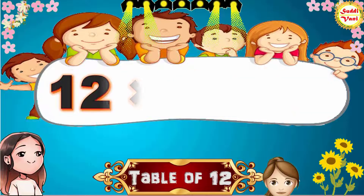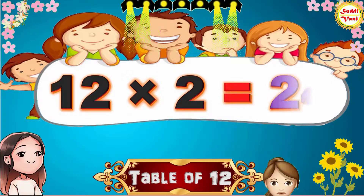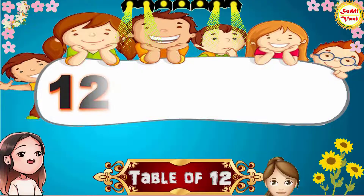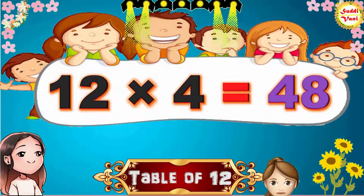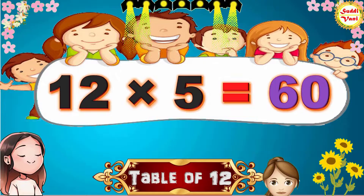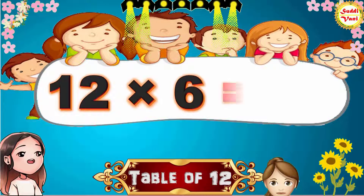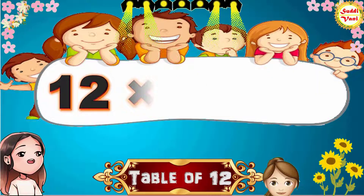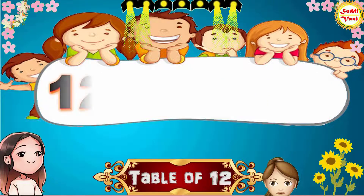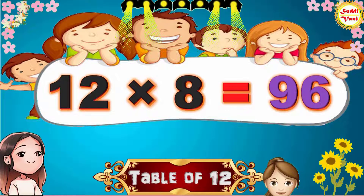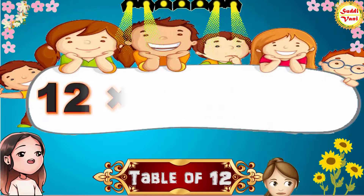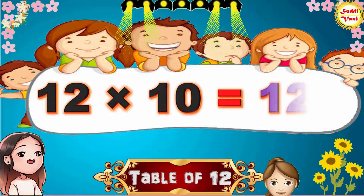12 1s are 12, 12 2s are 24, 12 3s are 36, 12 4s are 48, 12 5s are 60, 12 6s are 72, 12 7s are 84, 12 8s are 96, 12 9s are 108, 12 10s are 120.